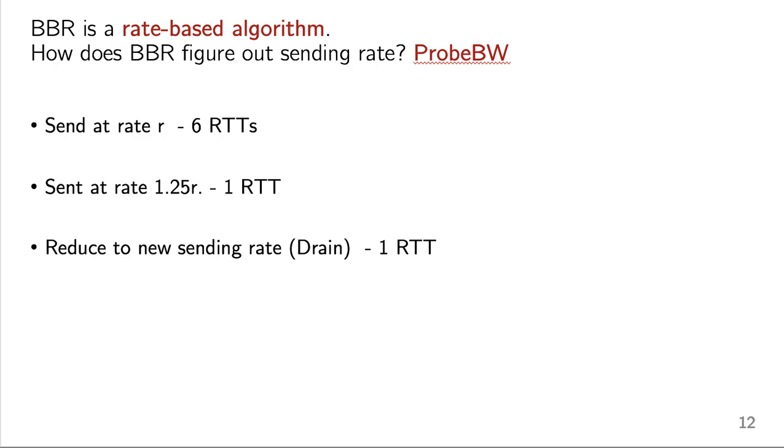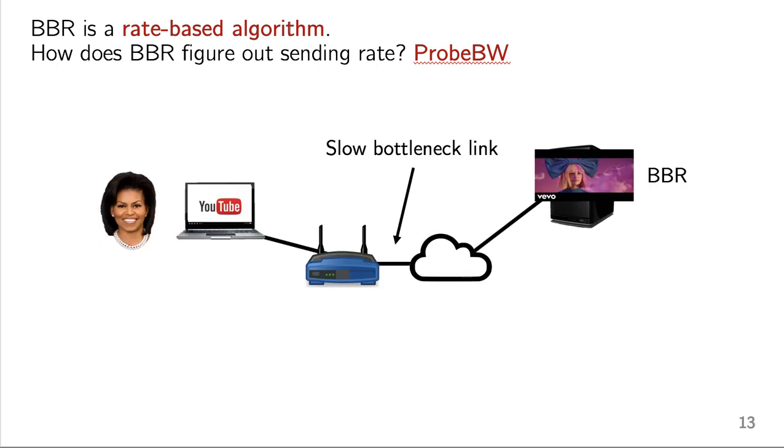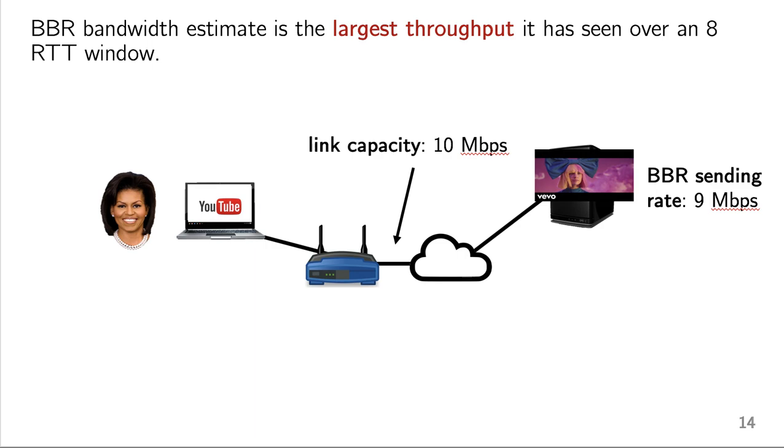So let's walk through an example of what this looks like in practice. Imagine, as I often do, that you are Michelle Obama. You are at home trying to watch YouTube, which uses BBR for congestion control. Your home access link is super slow, so it's the bottleneck link here. So when I refer to the bottleneck link or the bottleneck queue, this is what I'm talking about. The at-home router here and the queue inside of it. So in order to figure out how much bandwidth is available, BBR, while it's sending data, is going to keep track of the largest throughput it's seen over an 8 RTT window.